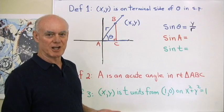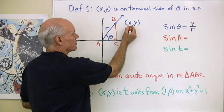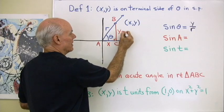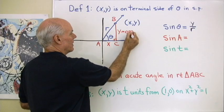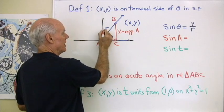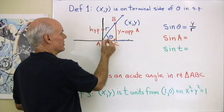Now what does my definition for sine A look like here? Well, I can tell because this point has coordinates X and Y, that's Y, that's X, and Y is opposite angle A and X is adjacent to angle A, and R is the hypotenuse of this right triangle.